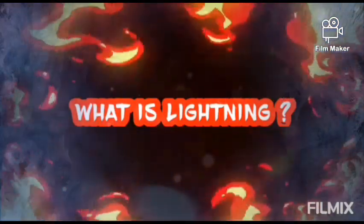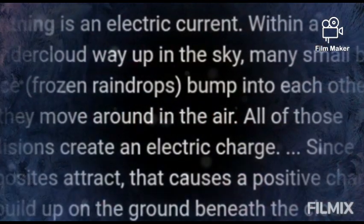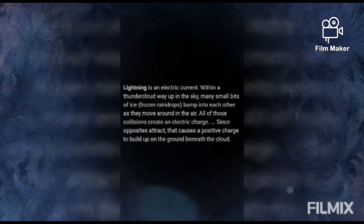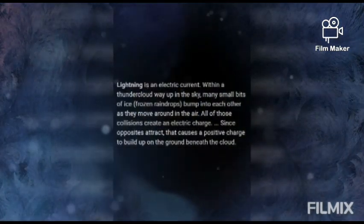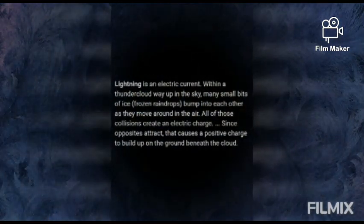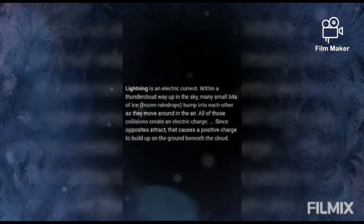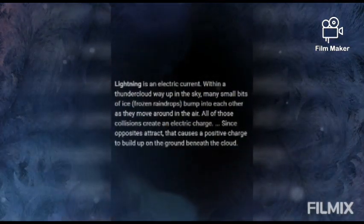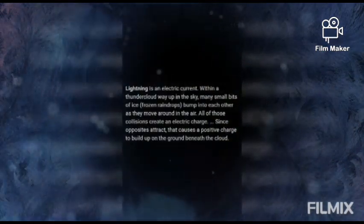Lightning is an electric current. Within a thundercloud, many small bits of ice bump into each other as they move around in the air. All of those collisions create an electric charge, and since opposites attract, that causes a positive charge to build up on the ground beneath the cloud.